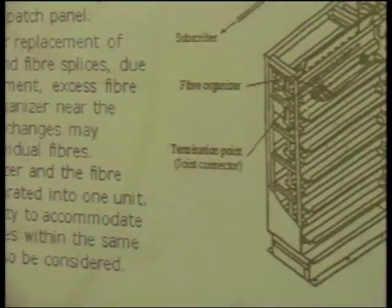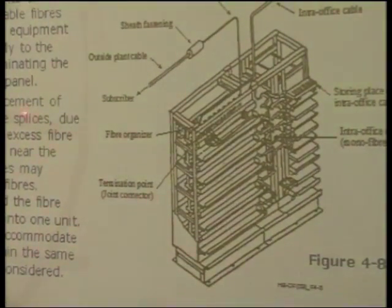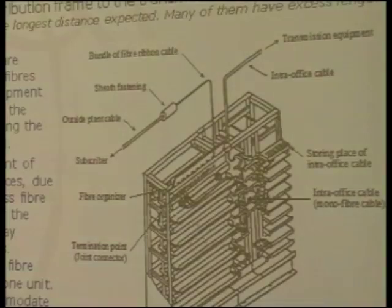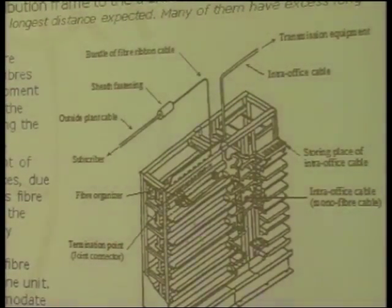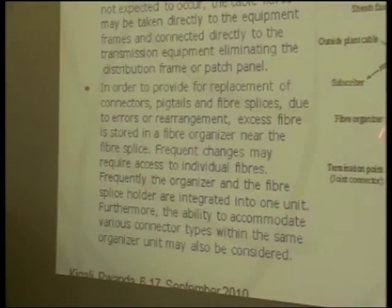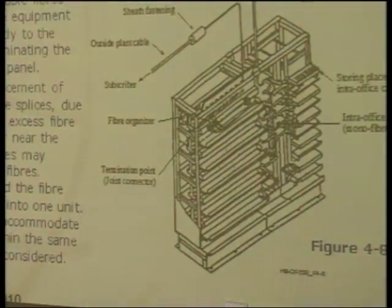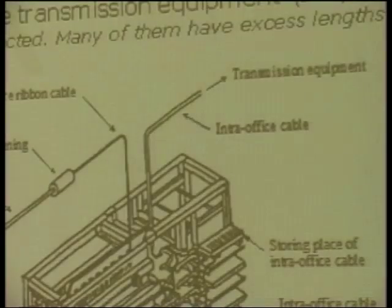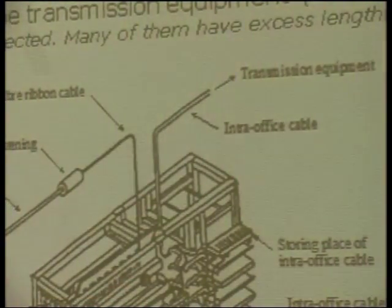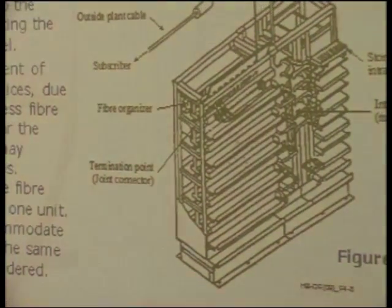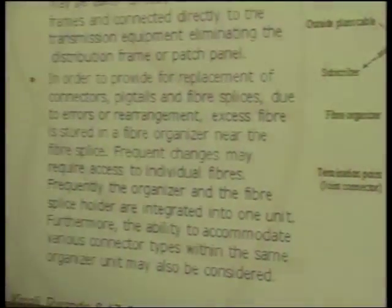It's important to consider that sometimes it's necessary to provide replacement of connectors, pigtails, and fiber splices due to errors or rearrangements. In this case, excess fiber is stored in a fiber organizer near the fiber splice, as shown in figure 4.8, where we can see the frame, cable, fiber organizer, and termination point. This structure organizes the transition between the cable and the transmission equipment.